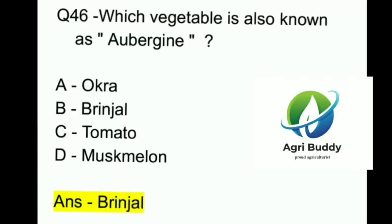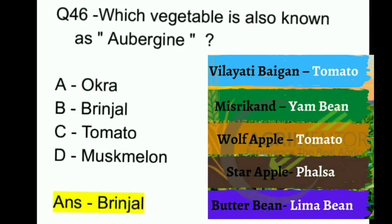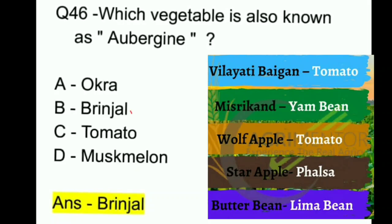Question 46. Which vegetable is also known as aubergine? A. Okra. B. Brinjal. C. Tomato. D. Muskmelon. And the answer is Brinjal.